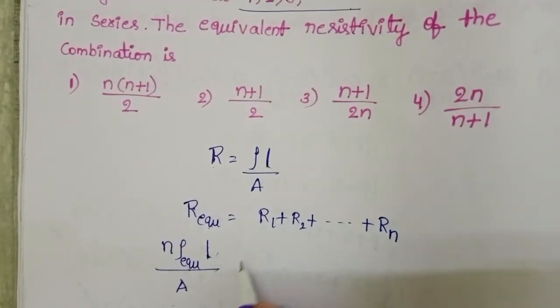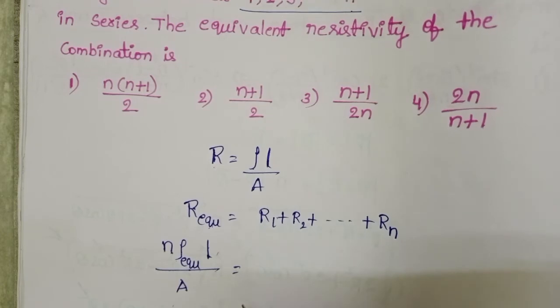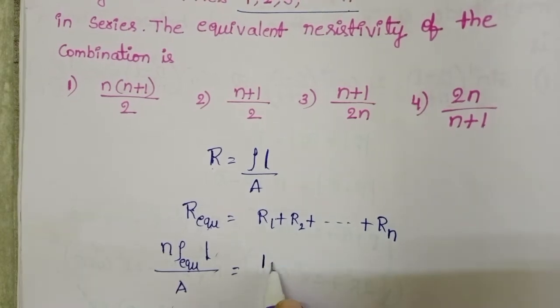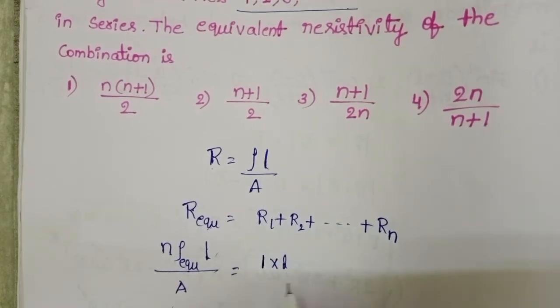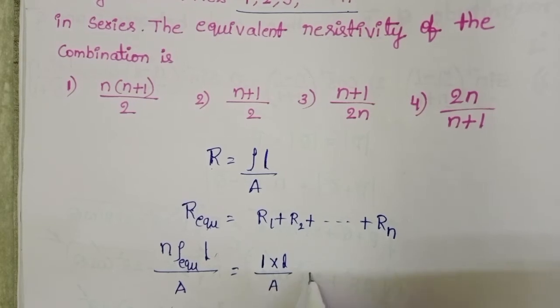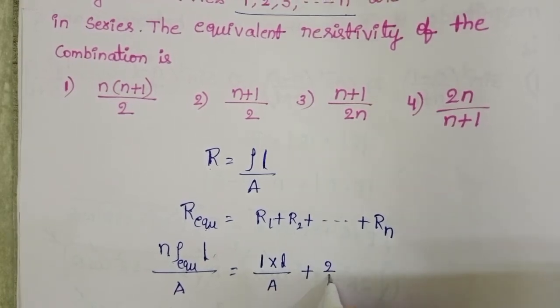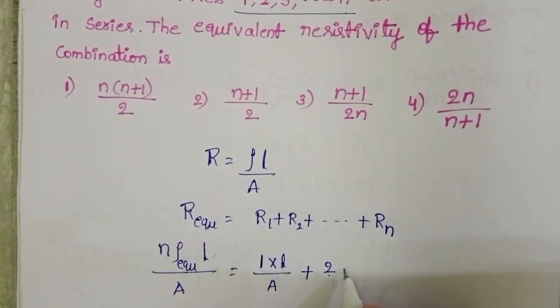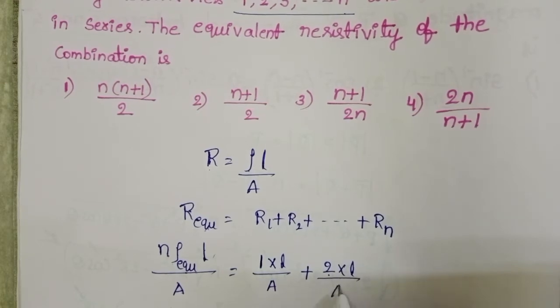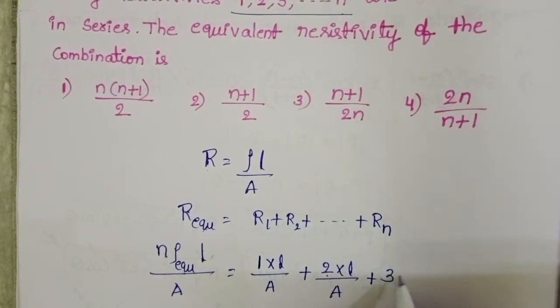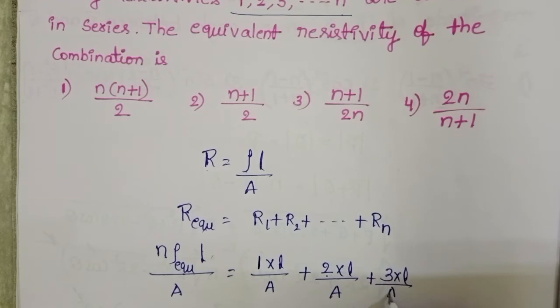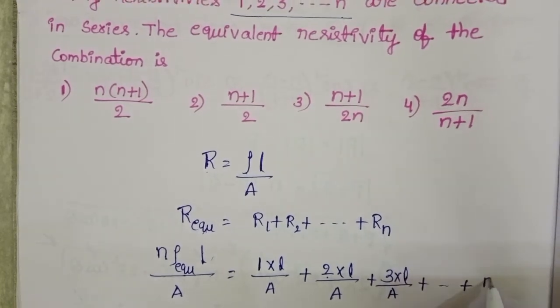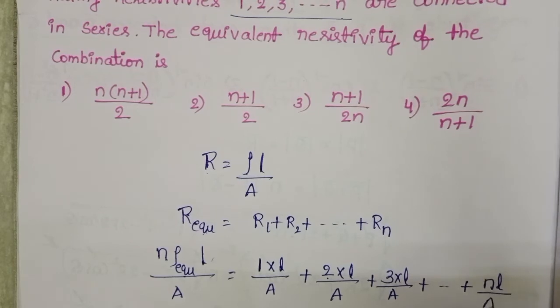And in place of R1, specific resistance is 1, 1 into L by A plus specific resistivity is 2, 2 into L by A plus 3 into L by A plus and so on plus N L by A up to N resistors.